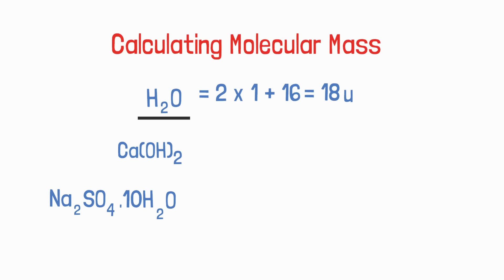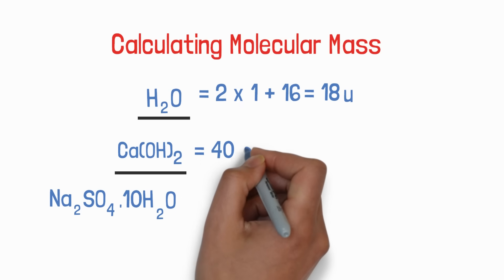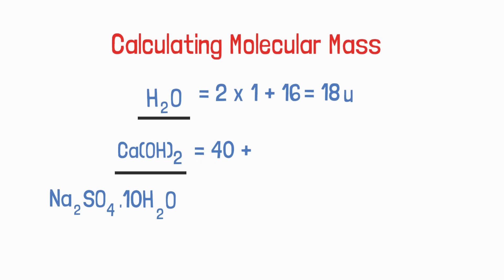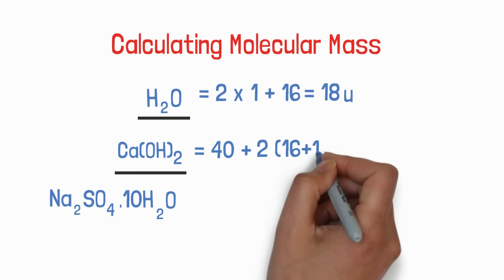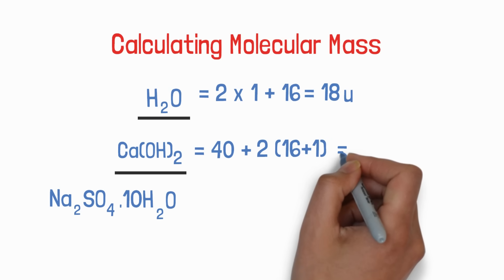Next is calcium hydroxide. It is important to understand its structure first. Calcium hydroxide has 1 calcium atom and 2 hydroxide ions. Calcium's mass is 40, and each hydroxide ion contributes 16 + 1. Because we have 2 hydroxide ions, we write 2 × (16 + 1). On calculation we get 74 U.